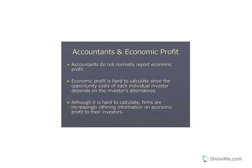One last point: because we calculate economic profit by subtracting equity capital from accounting profit, accounting profit should always have a higher value than economic profit. The simple math makes that true. So when you are calculating accounting and economic profit, if your economic profit number is greater than your accounting profit, you know you've done something wrong.